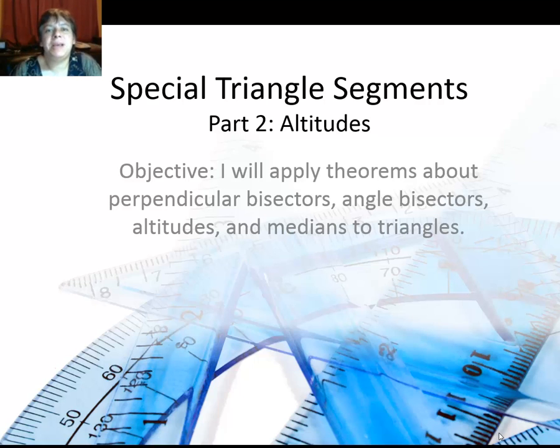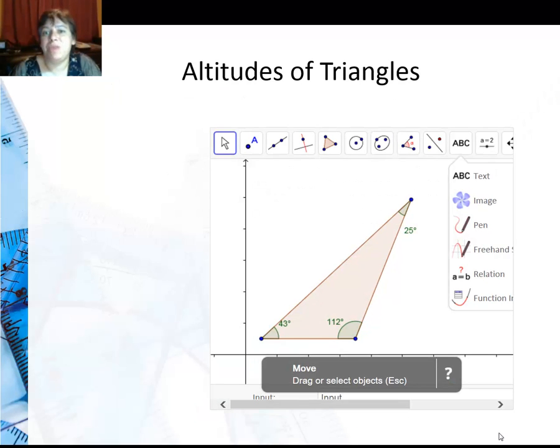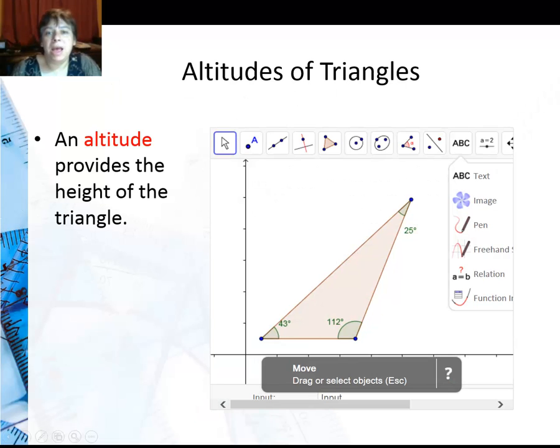Another special segment is the altitude, which is a little bit similar to the perpendicular bisectors in that they are perpendicular. An altitude provides the height of the triangle.